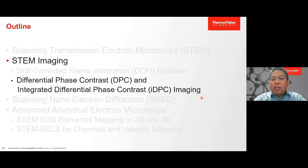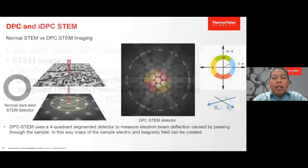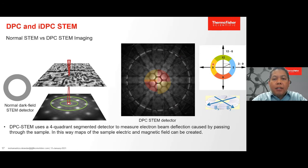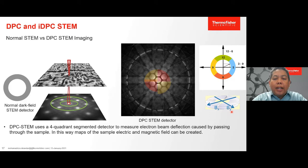The next imaging technique I want to discuss is differential phase contrast or DPC, and integrated differential phase contrast or iDPC. The normal STEM dark field detector has a ring form, and image formation comes from total electrons arriving at these ring detectors. The new STEM detectors, such as the Panther detector, contain four segmented areas. These four-quadrant detectors are used to measure electron beam deflections caused by passing through the magnetic or electric field of the sample — like the difference in X and Y directions — allowing us to map the electric or magnetic field.